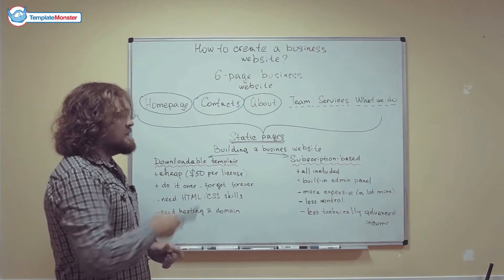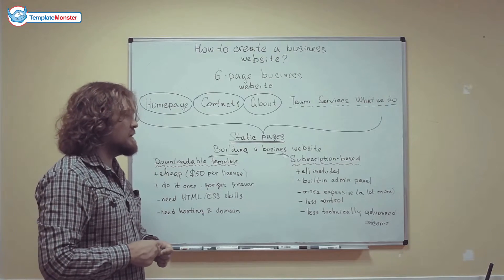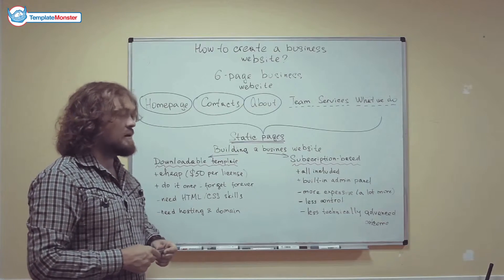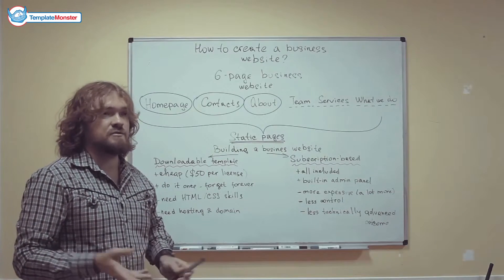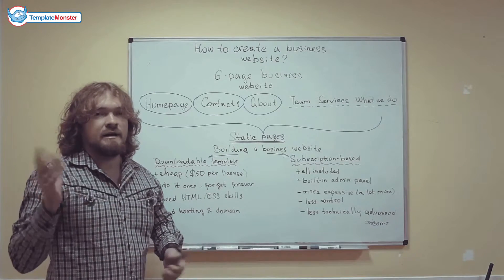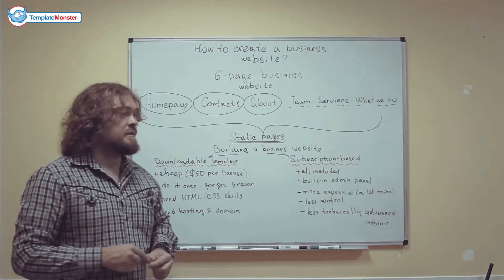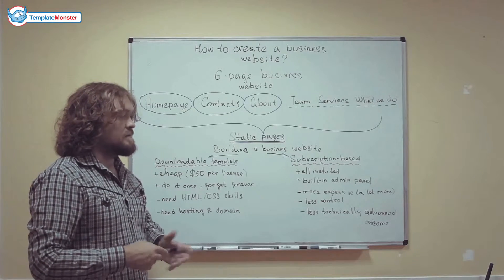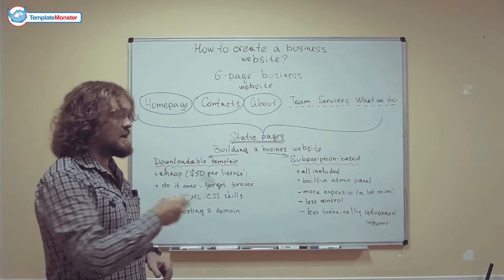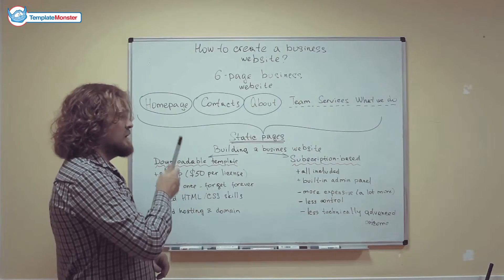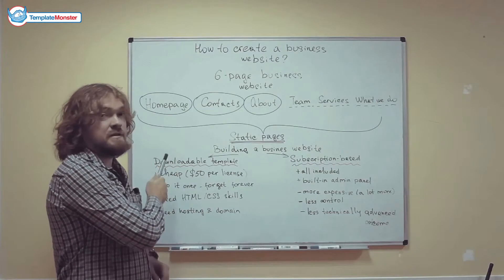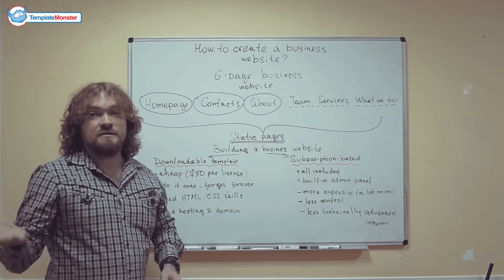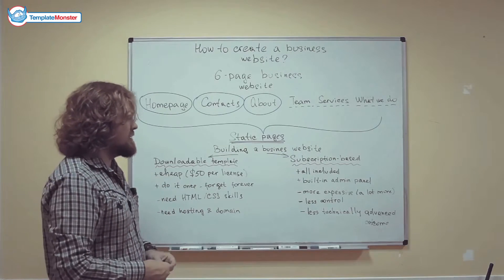The downside of this option is that it's a lot more expensive. Since you pay on a monthly basis — like $9 or $10 a month — after a year, this option becomes more expensive than the first one, not to mention the second year or the third year and so on.